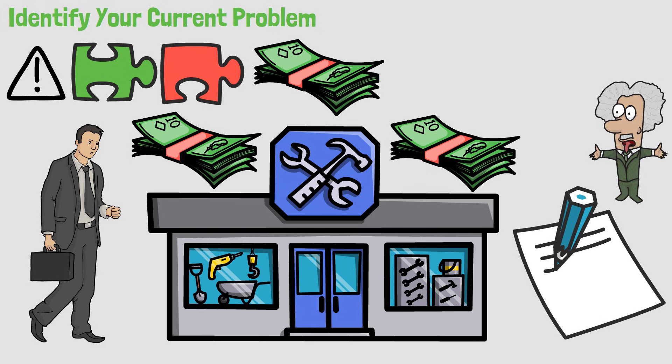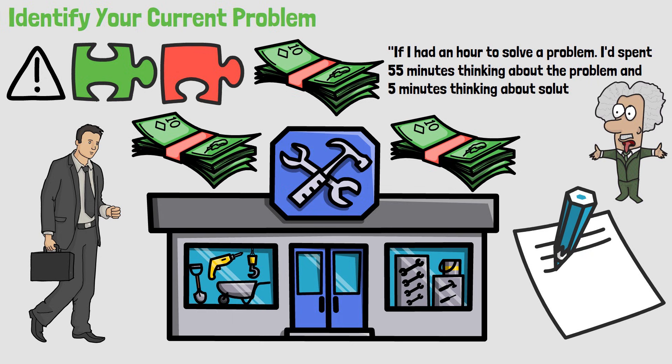Like Albert Einstein said, if I had one hour to solve a problem, I'd spend 55 minutes thinking about the problem and 5 minutes thinking about solutions. This quote shows how important it is to know your true problems. If you don't know your problems, how will you even start solving them?